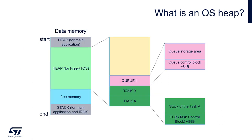The operating system heap is a memory area within RAM where all variables related to the operating system and its components are stored. In most cases, it is an area separated from the MCU stack and heap used to service interrupts and store global variables. Allocation and release of memory within this region is done by special functions that book memory space for each OS component during its creation. Most OS components — like tasks, queues, semaphores, and mutexes — need two memory areas.